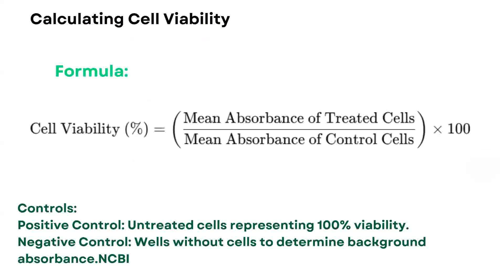The next step is calculating cell viability. The formula is: Cell Viability (%) = (Mean absorbance of treated cells / Mean absorbance of control cells) × 100. Positive controls are untreated cells representing 100% viability, and negative controls are wells without cells used to determine background absorbance.